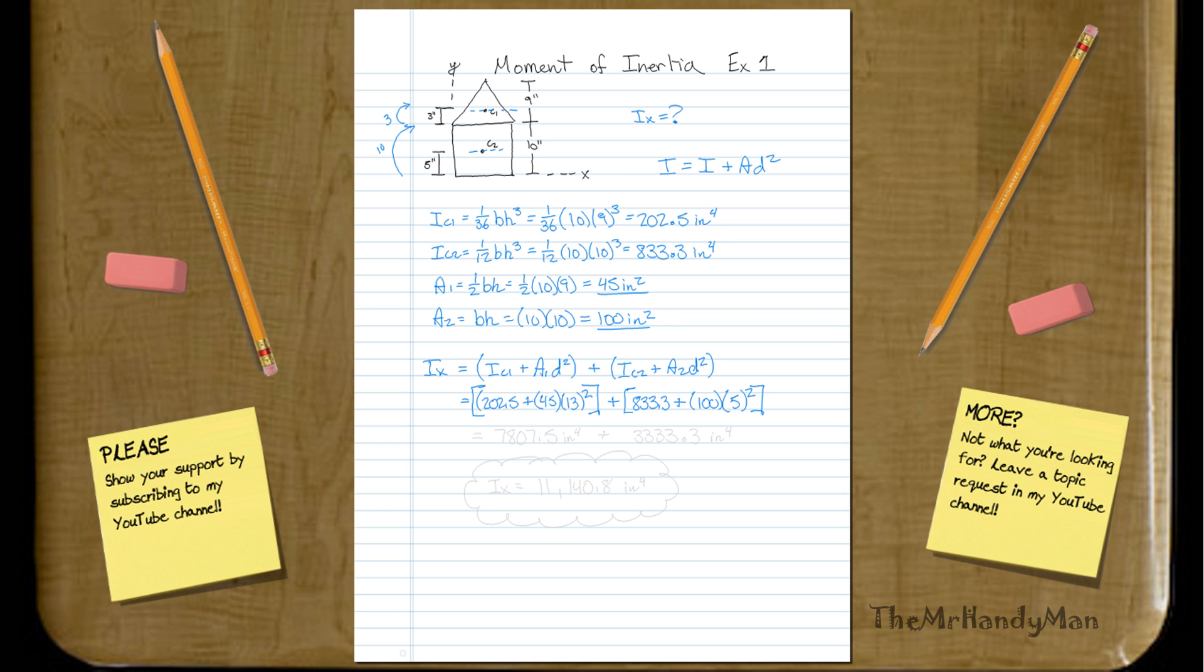And when you work all this out, you'll find that the inertia due to the triangle is seven thousand, eight hundred and seven point five, and that's inches to the fourth power, plus three thousand, three hundred and thirty-three point three inches to the fourth power.